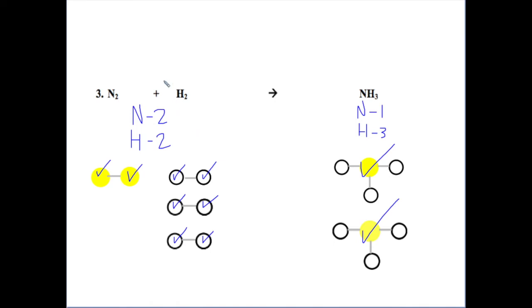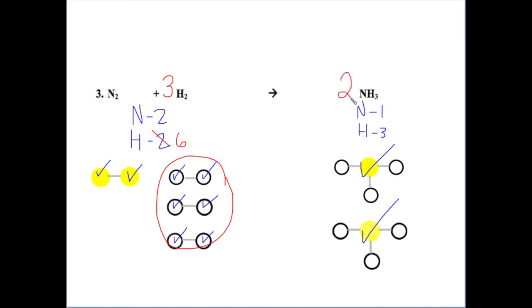We will add a coefficient of three in front of the H2 molecule because we have three H2 molecules. That gives a total of six hydrogens and two nitrogens on the reactants side. On the product side, we have two NH3 molecules — we show that with a coefficient of two in front of NH3. That means we have a total of two nitrogens and six hydrogens. Everything is balanced.